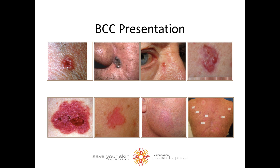Superficial BCC presents as a scaly patch or plaque. It looks like a rash in some cases. It may appear flaky and thin with a translucent border, or it may appear like there's an open wound in the middle. As seen in nodular BCC, there can also be colorization due to melanin deposits.